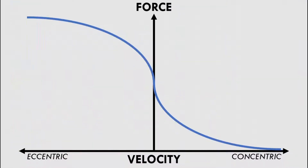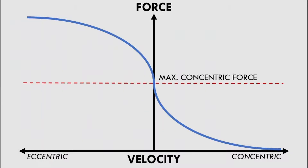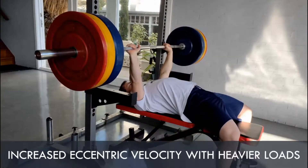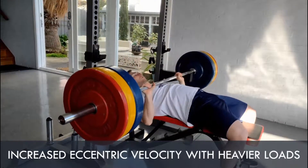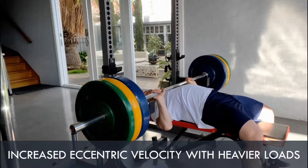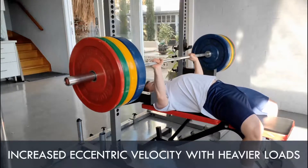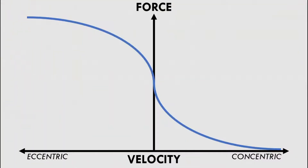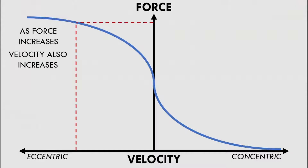During this phase, force and velocity have the opposite relationship that concentric muscle actions have. This is because we can actually produce more force eccentrically than concentrically. For example, you can lower more weight than your one rep max down under control in a bench press, but you can't press it back up. The more load that is lifted eccentrically, the harder it is to control. Because of this, the weight can't be controlled as slowly with very heavy loads, so the velocity increases. As force increases, velocity of movement also increases.